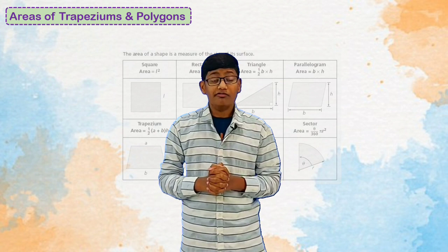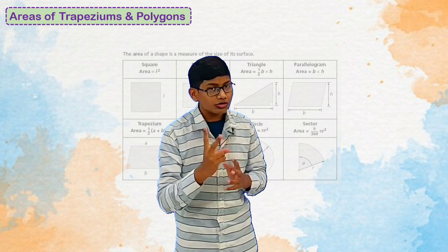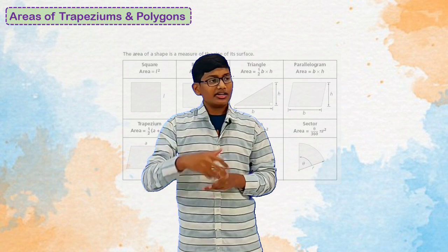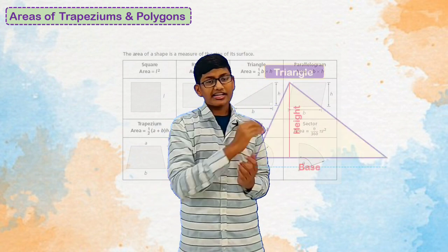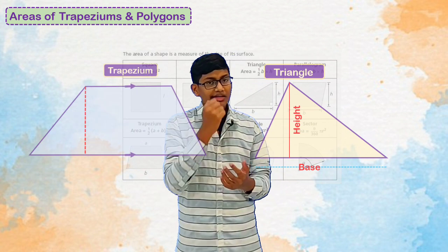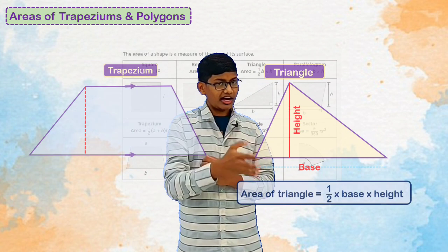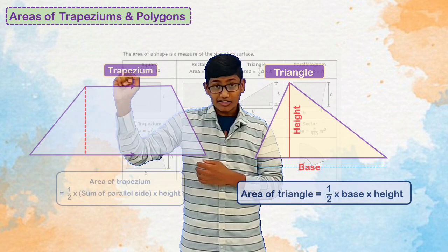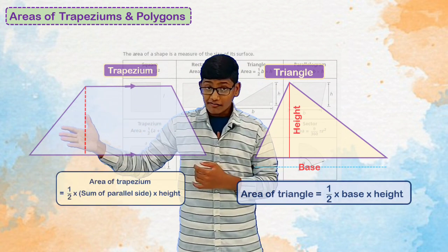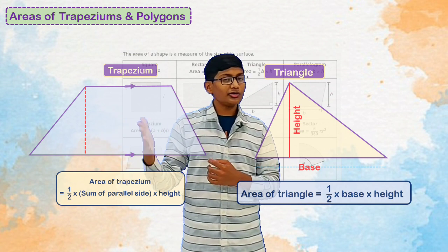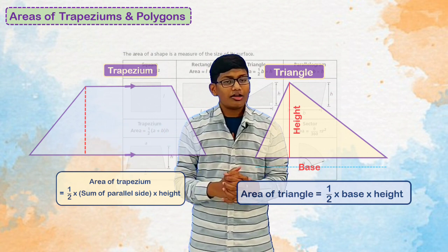To attempt this problem we need to know two formulas. They are nothing but area of triangle and area of trapezium. Area of triangle: half into base into height. Area of trapezium: half into sum of parallel sides into height.